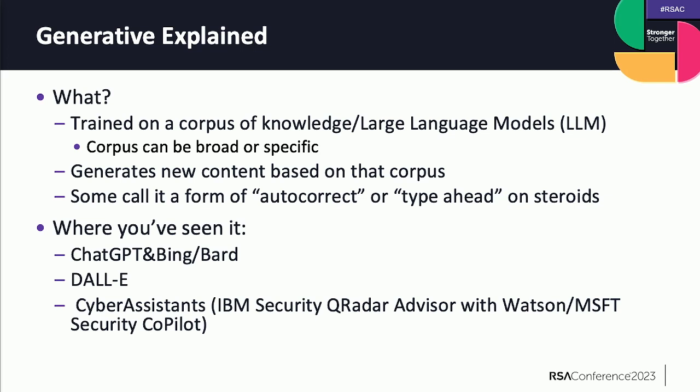You've seen it in things like ChatGPT. If you've seen weird pictures starting to win photography contests and graphic arts contests — DALL-E is a generative AI that uses images. And now we're starting to see it more in cyber assistance: QRadar Advisor with Watson and Microsoft Security Copilot, which are going to be on a very narrow corpus.